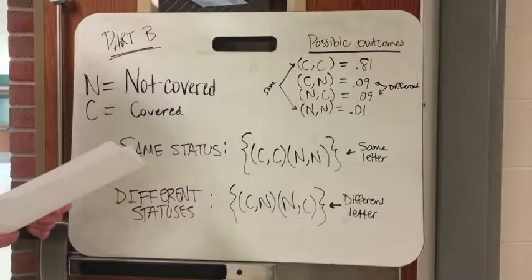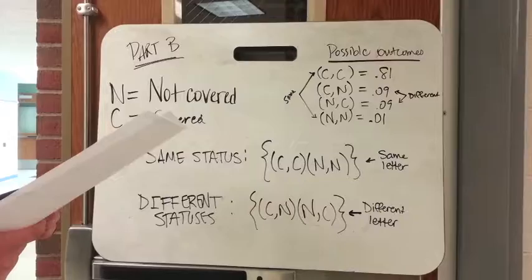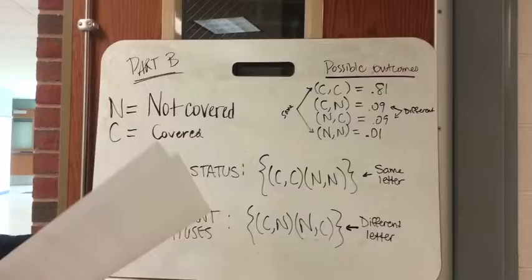So part B, what outcomes are contained in the event that two patients have different statuses with respect to coverage? Different and statuses are going to be the condition, so I'll cover different first.